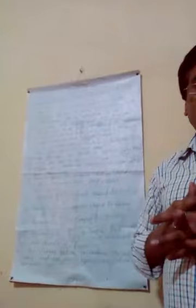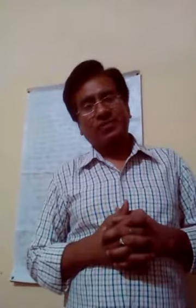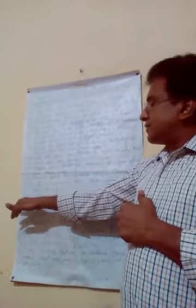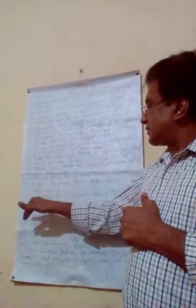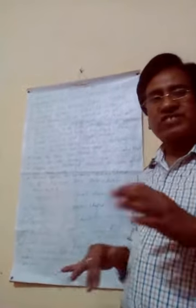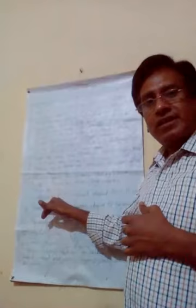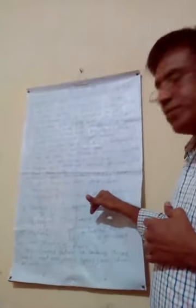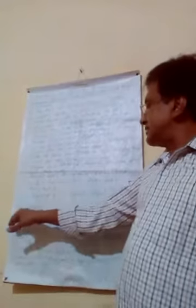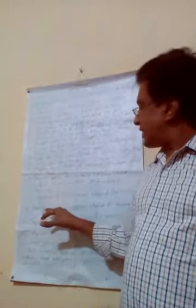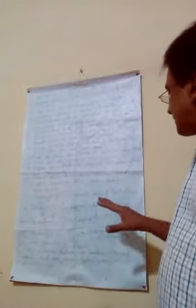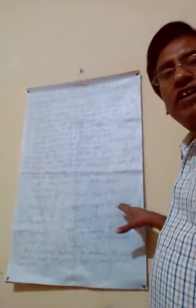Humans are heterodont because they have four types of teeth. The first type is incisors — the total number of incisors in our buccal cavity is eight. They are chisel-shaped and are used for biting food. The second type is canines — the number of canines is four. They are dagger-like in shape and are used for tearing food.